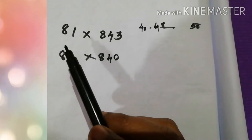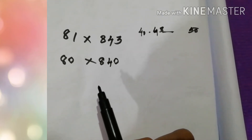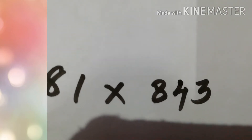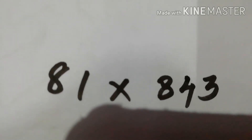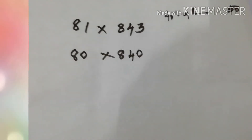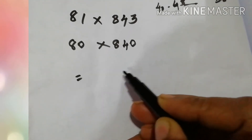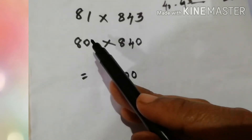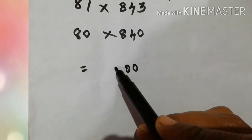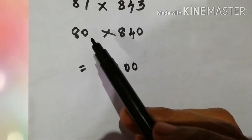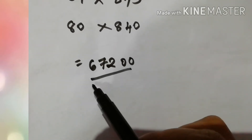Then we can multiply this number. Like this, we can do addition, multiplication, and subtraction. Here is a question — we need to multiply this number after estimating it to its nearest value. We can easily find out the value. In the answer, we will get two zeros. Then we multiply 8 with 4: 8 fours are 32, carry 3. Then 8 eights are 64, plus 3 is 67. This is the answer.